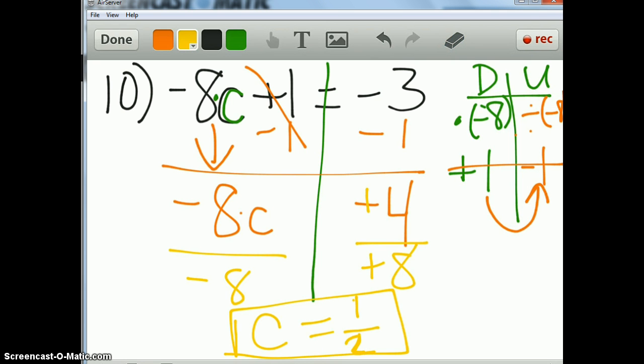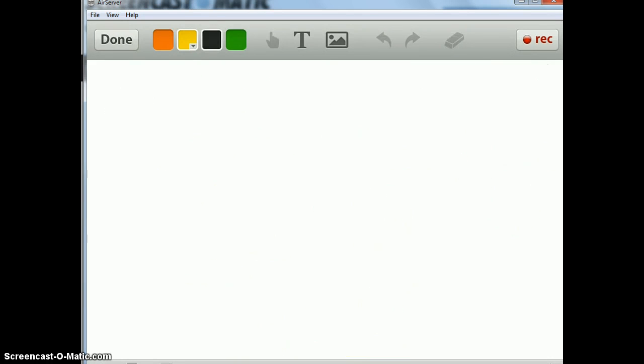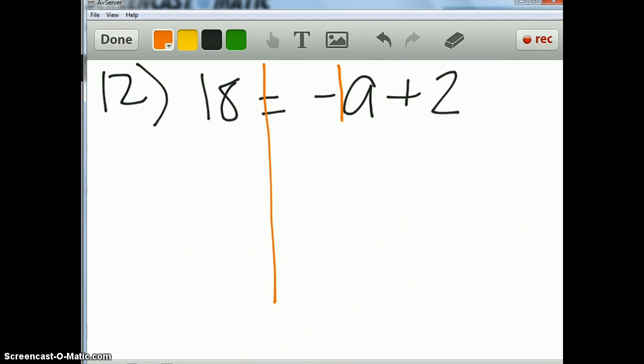Let's go on to another one. Let's do 12. When I look at 12, it says 18 equals negative a plus 2. Now let's look at this negative a for a second. What number technically is in front of there? You can always multiply by 1. That's the multiplicative identity, and it doesn't change anything. So I'm going to put a 1 there just to help us not get lost.